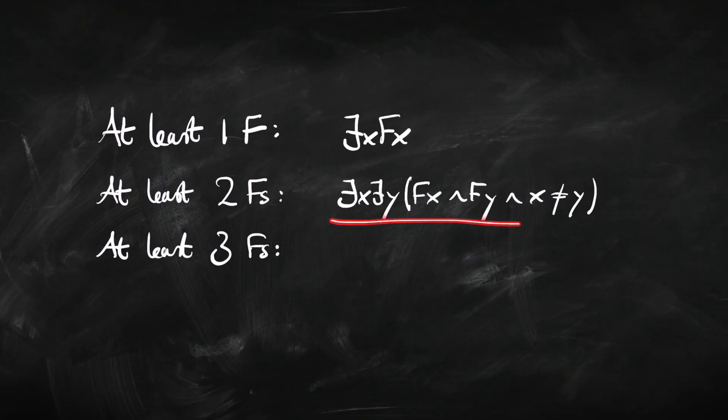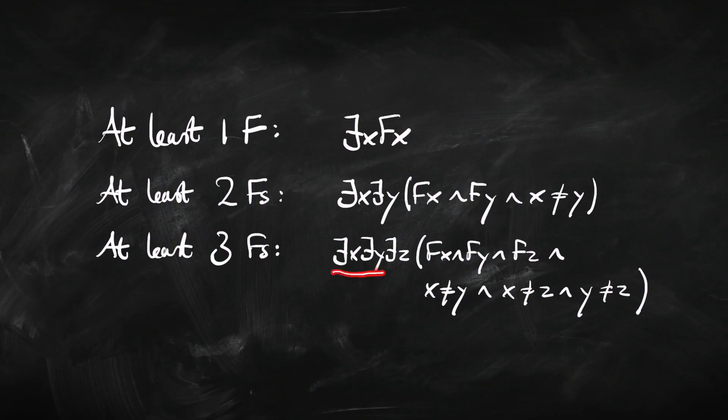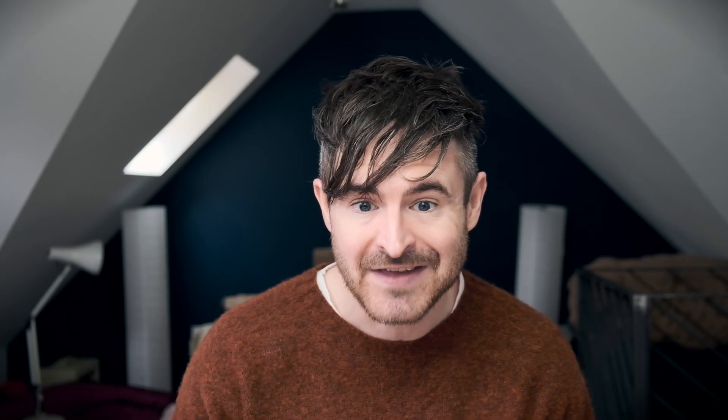What about saying there's at least three F's? We use the same pattern, just more complicated: there's an x, a y, and a z; x is F, y is F, and z is F; and none of them are identical to any of the others — x isn't y, x isn't z, and y isn't z. That also covers the cases where y isn't x, z isn't x, and so on. So that's how we say there is at least n — one, two, three, four, whatever — of something.